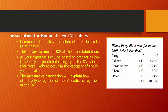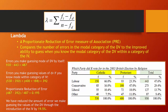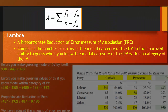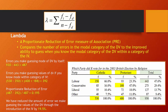For example, let's say we wanted to predict which party someone voted for in the 2005 British election — Labour, Conservative, Liberal, or other. Let's start with a basic measure of association: lambda. Lambda is what's called a proportionate reduction in error measure. It asks: how much does knowing the values of cases on the independent variable help us improve our ability to predict their values on the dependent variable? If they're perfectly related, knowing a case's value on the independent variable allows perfect prediction. If they're unrelated, knowing the independent variable value is of no help at all.